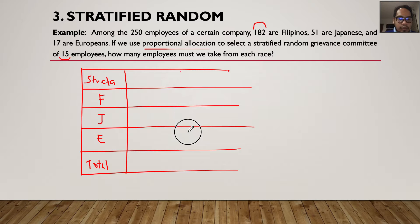Okay, so that's for the first column. For the second column, I must write the big N or the population per stratum. So for the Filipinos, we know that we are 182. For the Japanese, they are 51. Sorry, this is a 2. Europeans, we have 17 of them. And a total of 250 all in all.